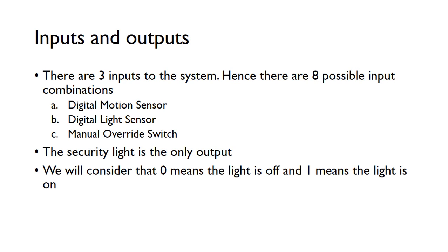We've got three inputs to the system, so we have eight possible input combinations — two to the power of three gives us eight possible input combinations. We'll call input A the motion sensor, B the light sensor, and C the manual override switch.